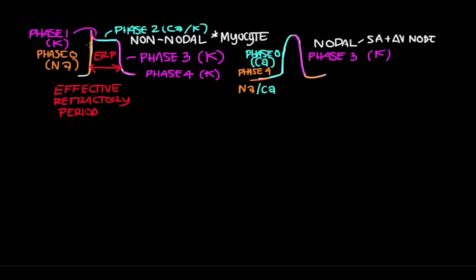What would happen if we increase our ERP? Well, you would increase the amount of time between depolarizations, therefore increasing the time between heartbeats or when the myocyte can contract. If you're increasing the time between heartbeats, you're decreasing the heart rate. That's how some antiarrhythmics work, and we'll revisit this in a moment.